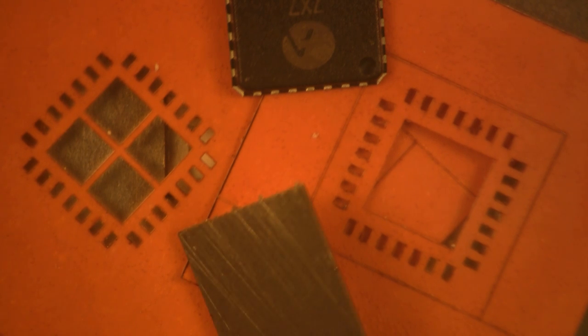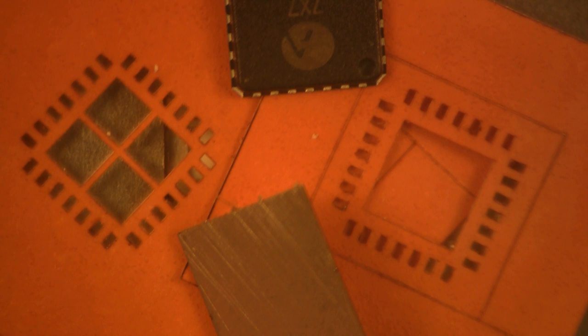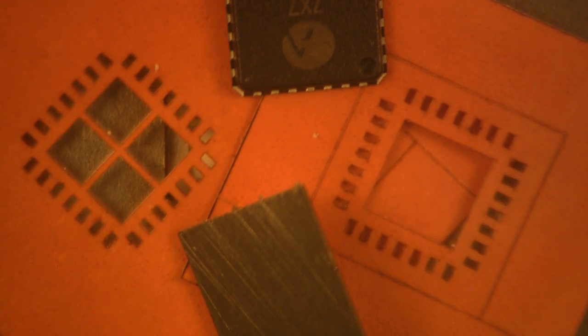What do we use StencilMate for? Very easy. It is to bump BTCs, bottom termination connections, on our part, and the other stencil is going to be actually utilized on our board. That way we get a part that looks sort of like a BGA, a ball grid array, but we bump the part and it's easier to rework.